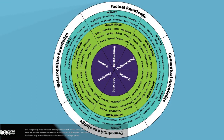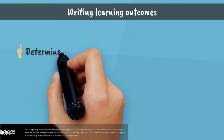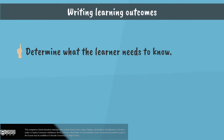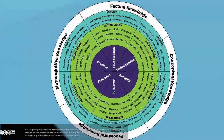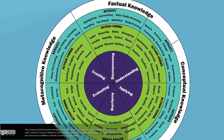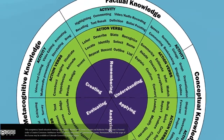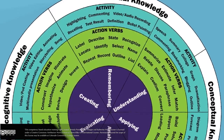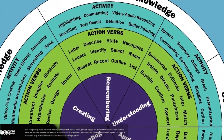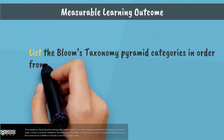Now that we have gone over each category and seen some verbs and activities associated with each, we will use this wheel to help create course learning outcomes. First, determine what the learner needs to know, then determine the appropriate level and verb from the Bloom's wheel. For example, one learning outcome from this video would be for the learner to remember the hierarchical categories. Using the wheel, the level and verb would be remembering, and the measurable outcome would be: List the Bloom's Taxonomy pyramid categories in order from top to bottom.